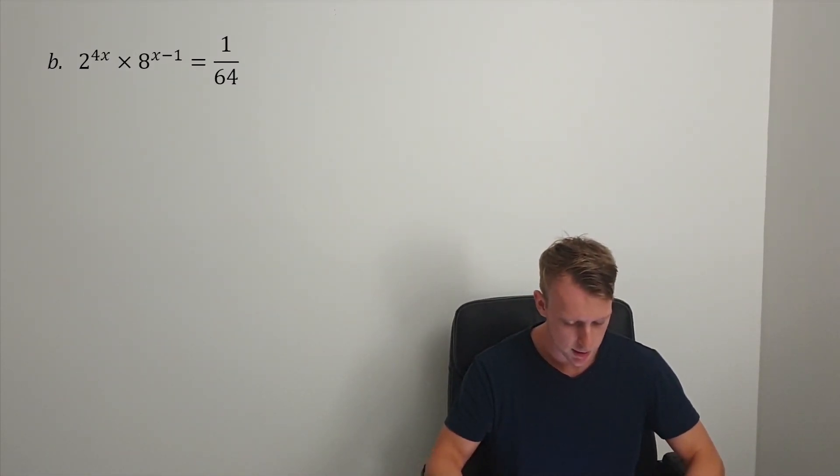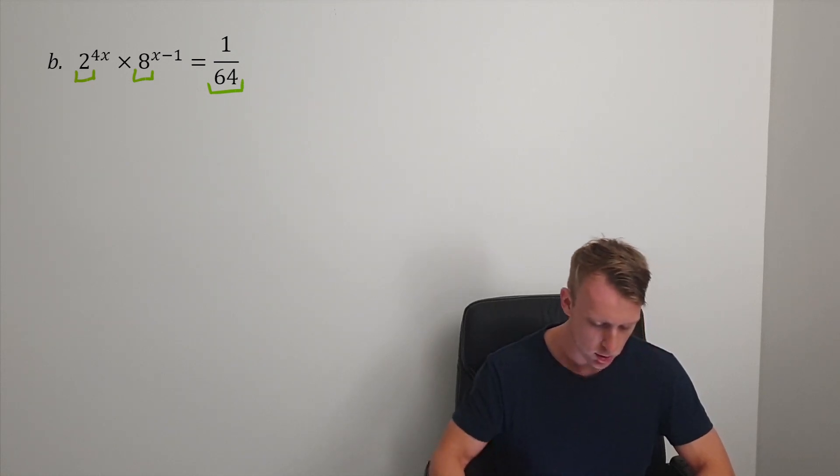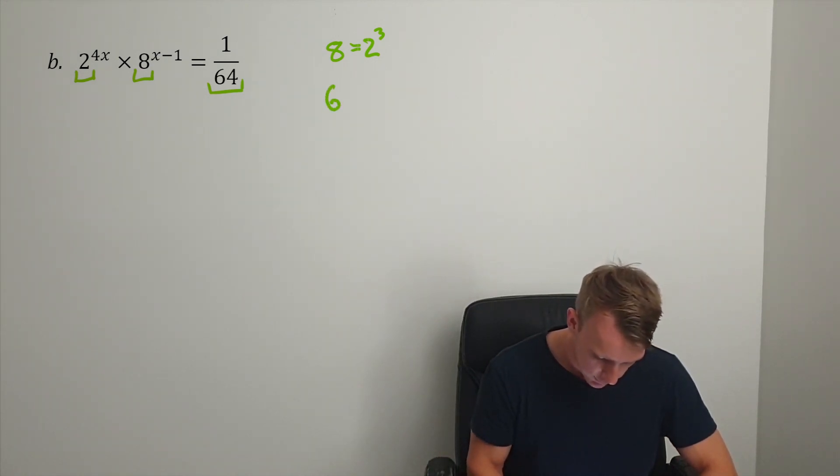Then you get some that are a little bit trickier. We need the base number to be the same. Let's do this in green. I've got 8, I've got 2, and I've got 64. They can all have a base of 2, because 8 is equal to 2^3 and 64 is equal to 2^6.